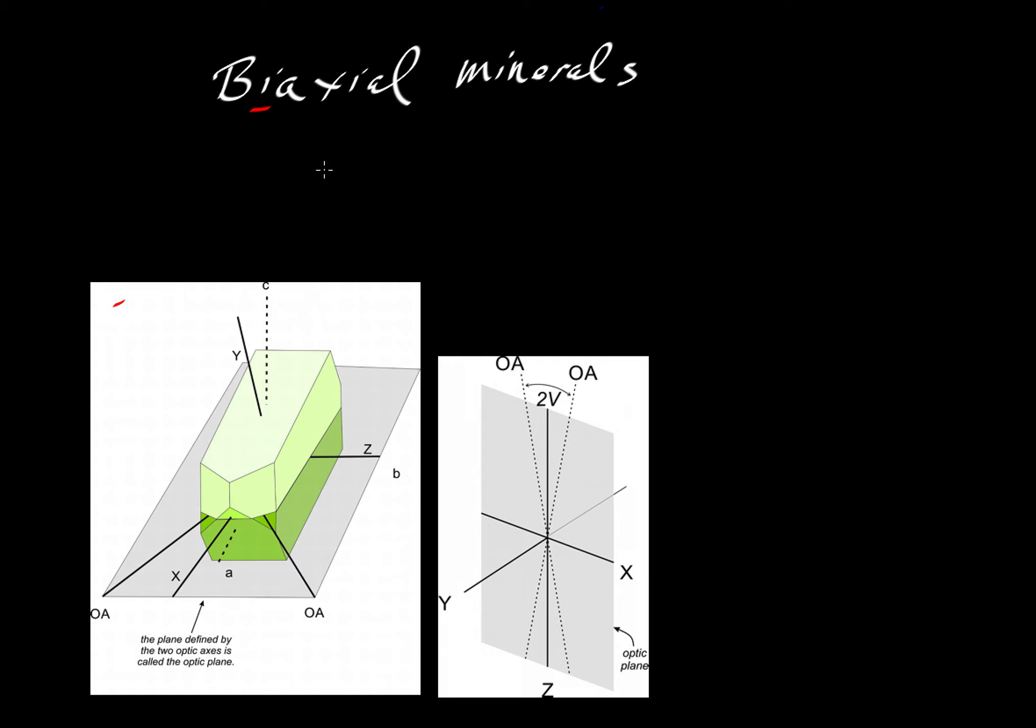So biaxial refers to the case where we have two separate optic axes, but we're going to get to that a little bit later. First, we want to talk about the axial directions themselves. We have the crystallographic axes A, B, and C, and this will be for any mineral that is in the orthorhombic, monoclinic, or triclinic mineral system.